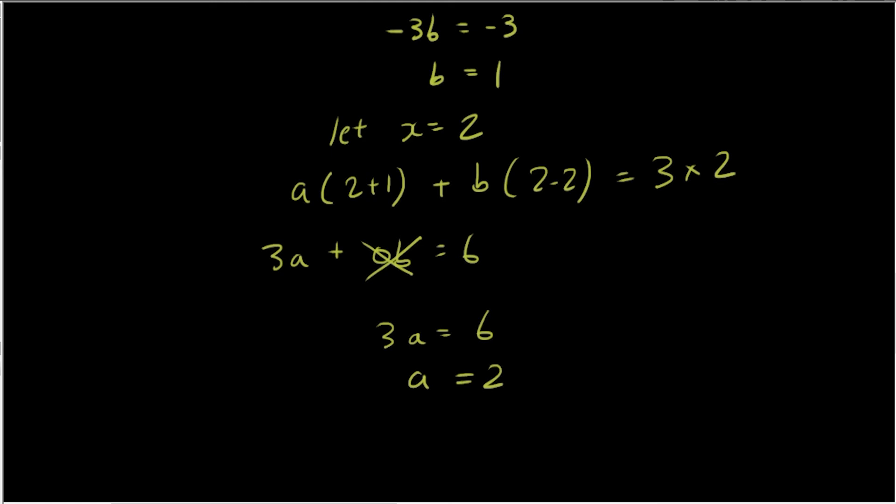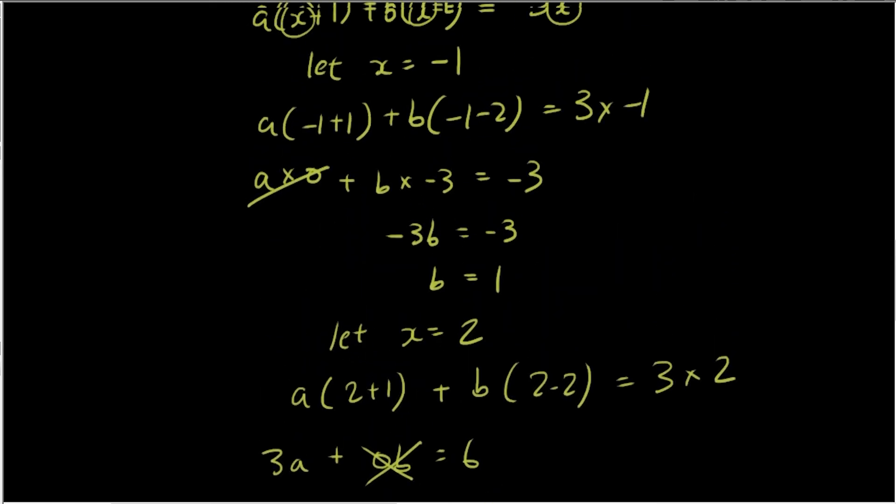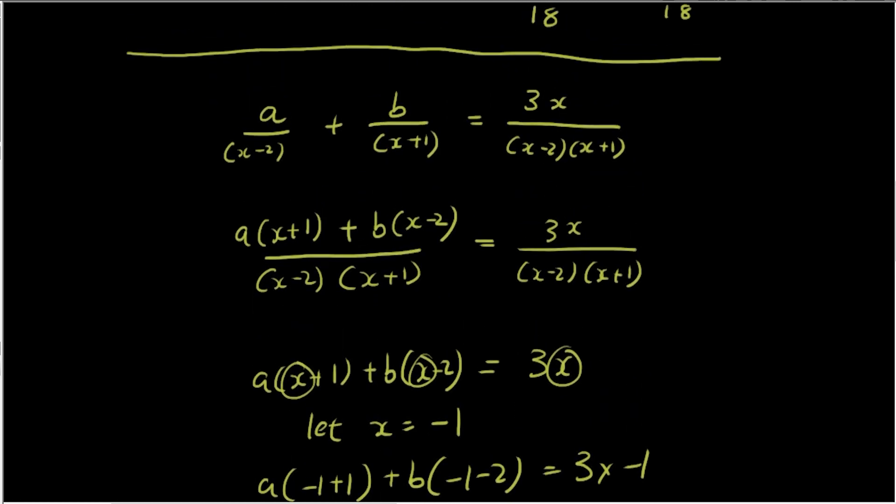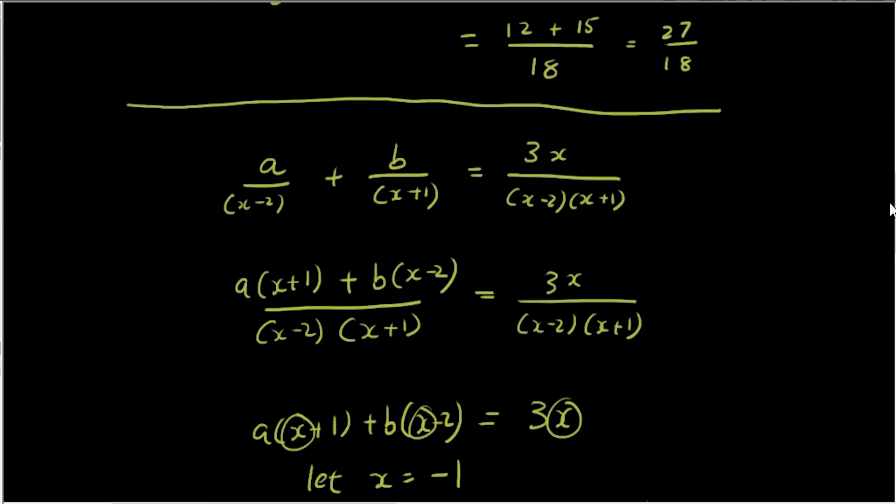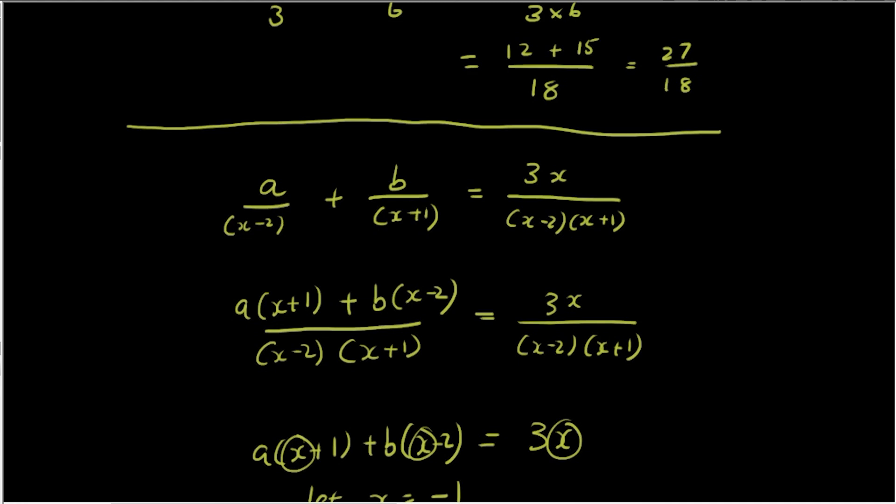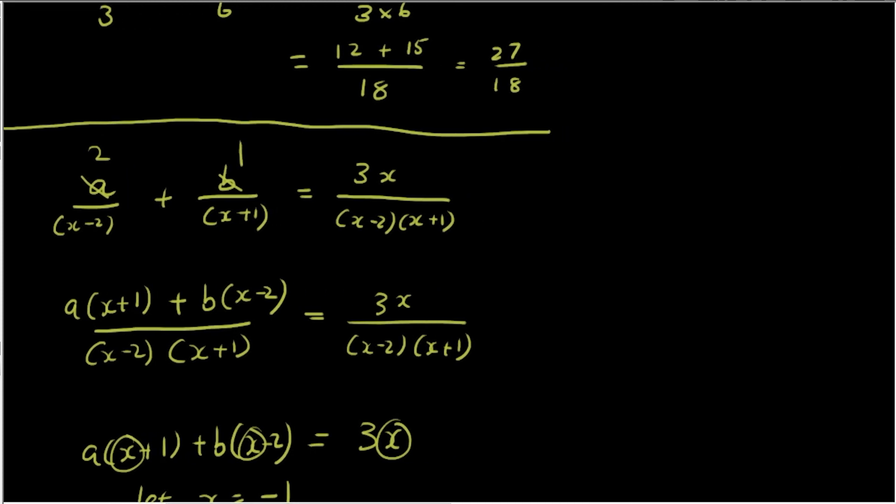So now what do we do? a is 2, b is 1. Let's now go back to the start here. a is 2, b is 1, so I can now fill that in. Let me double check: a is definitely 2, b is definitely 1. So I can now write a is 2, b is 1. I found what a is, found what b is. So that equals 2/(x - 2) + 1/(x + 1).